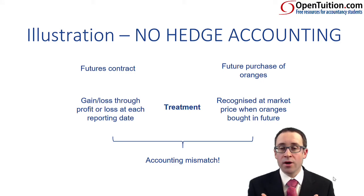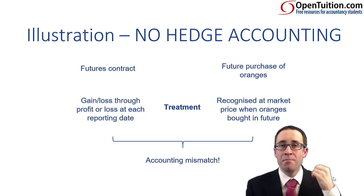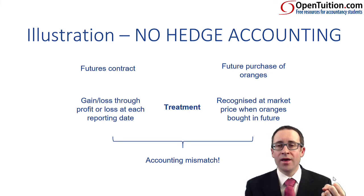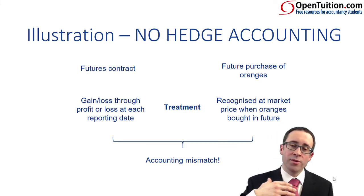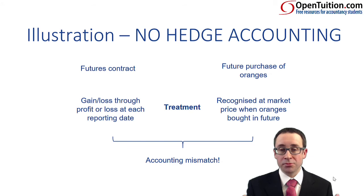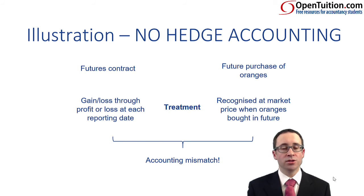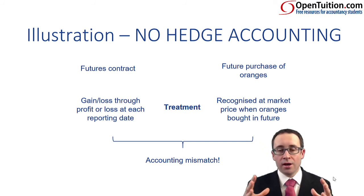That's where we put in a process of hedge accounting. We need to make sure that if we buy the oranges and pay more than the $0.2 million, giving us a loss on the purchase, we have a gain on the futures contract to offset it. Conversely, if the price goes down and we pay less than $0.2 million, we have a gain on the purchase — so we need a loss on the future to offset that gain. We need to ensure gains and losses are recognised in the correct and same period and in the same financial statements — with no accounting mismatch.